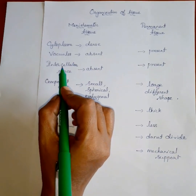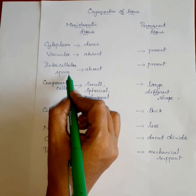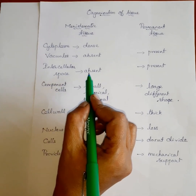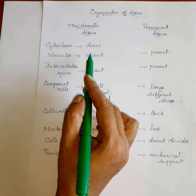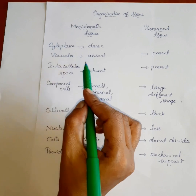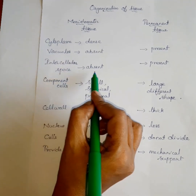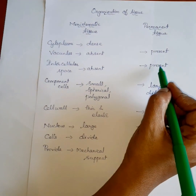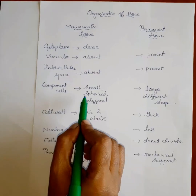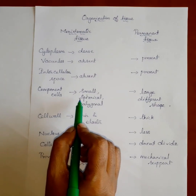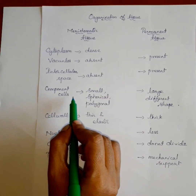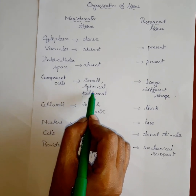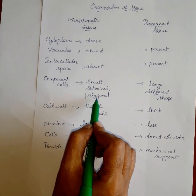Next one — intercellular space. Intercellular space is absent in meristematic tissue. Intercellular space is present in permanent tissue. The component cells are small, spherical and polygonal.